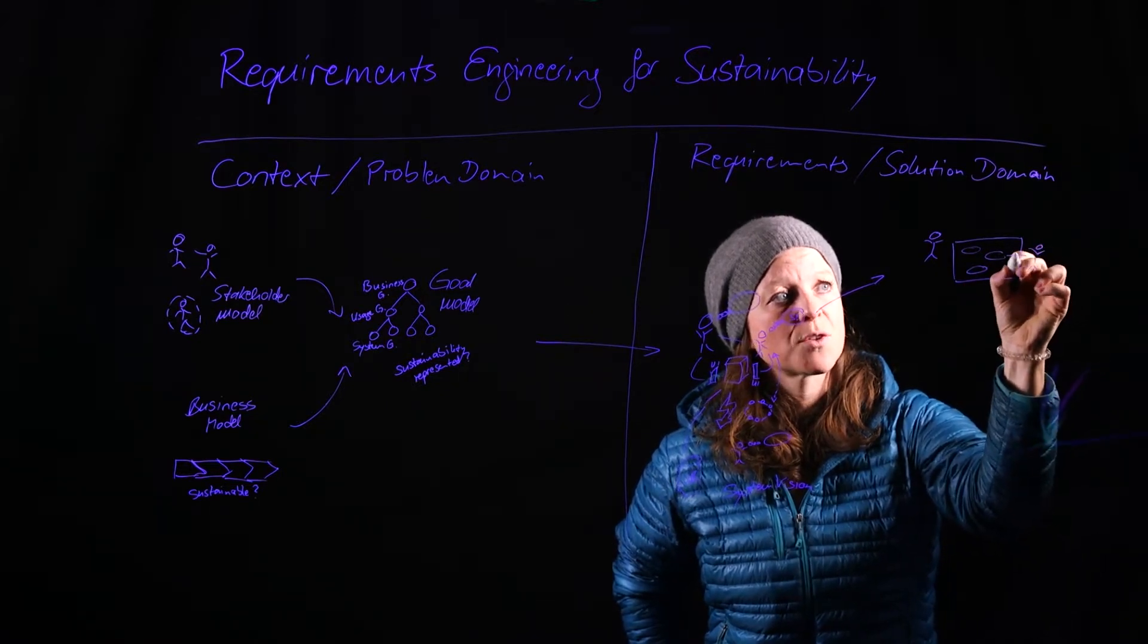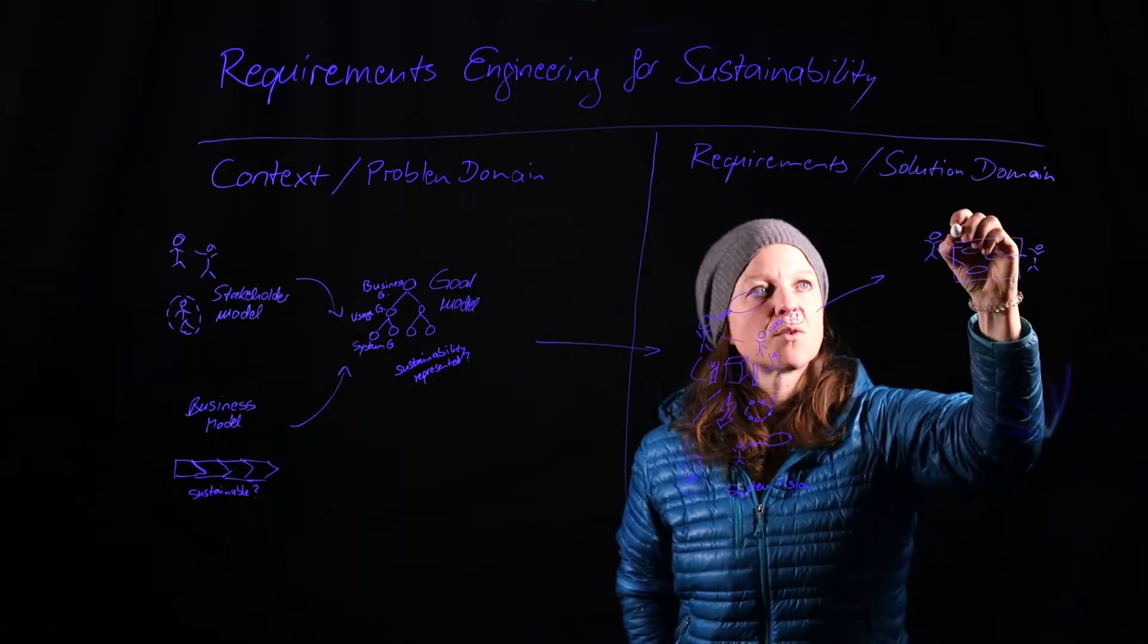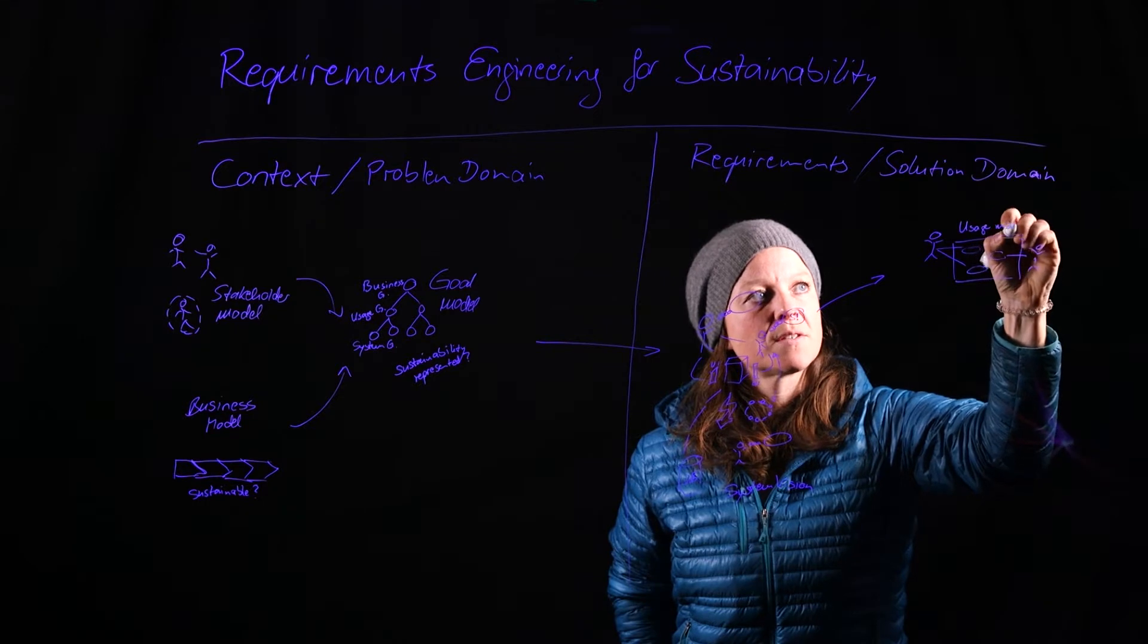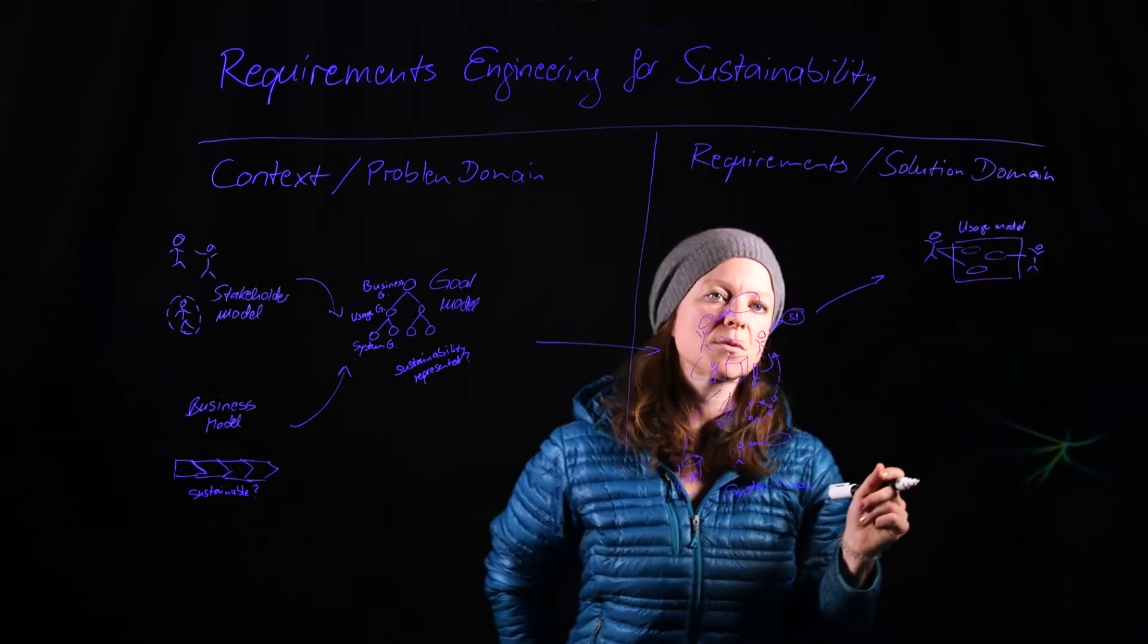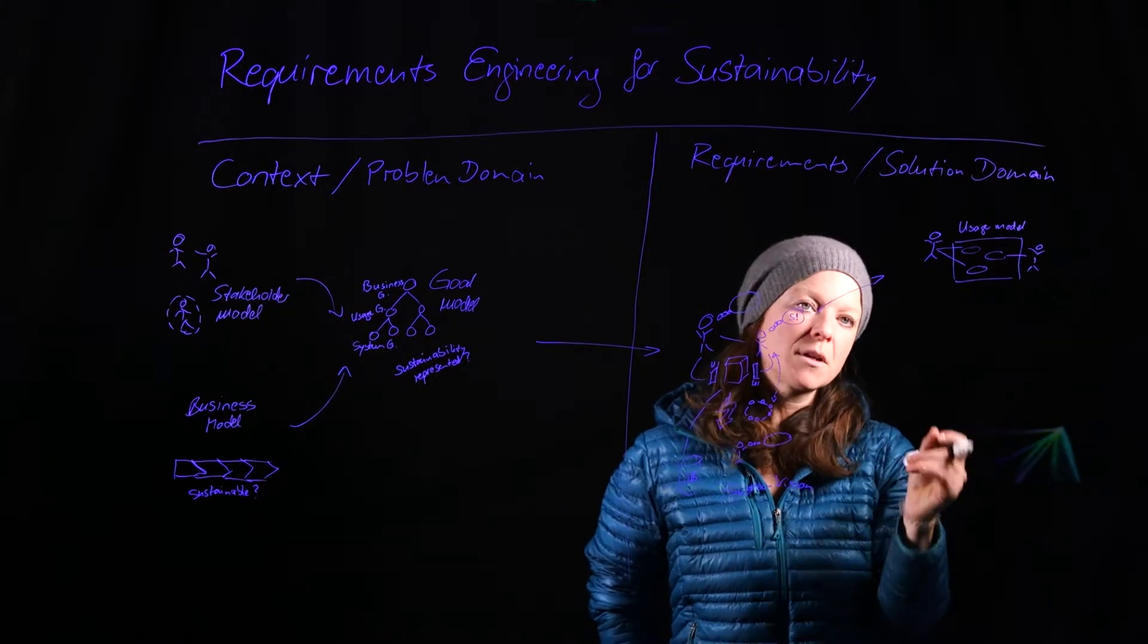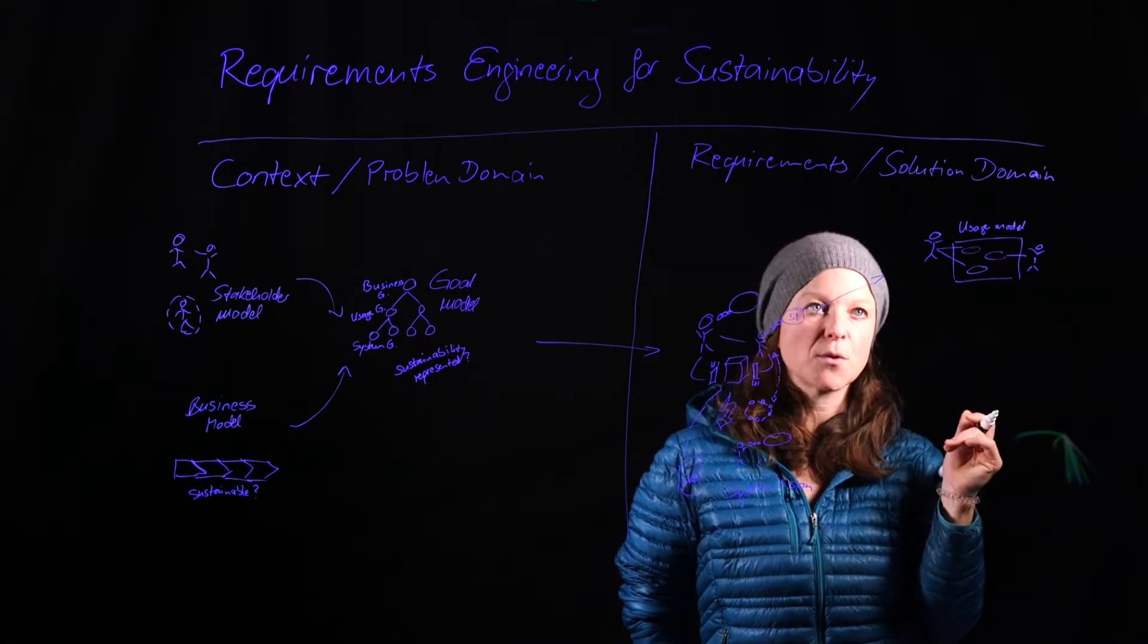Maybe I have several actors in here. Maybe I only have one. I have my system boundary and my individual use cases that get refined in scenarios. So that will describe, still on a black box level, but in a little more detail what exactly the system is going to help us carry out.